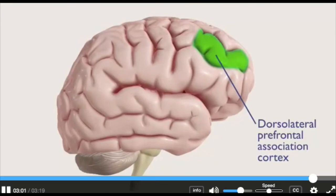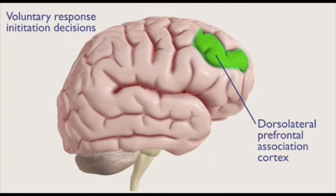The dorsolateral prefrontal association cortex plays a key role in voluntary response initiation decisions. Damage to this part of the brain would make it impossible for you to separate relevant and irrelevant sensory feedback about your movements, a process called sensory gating.